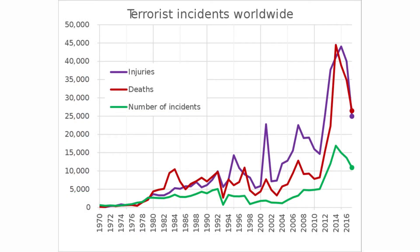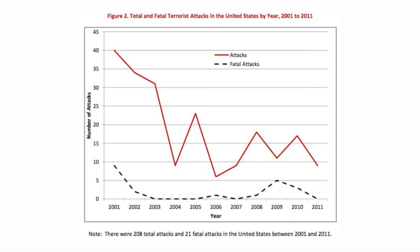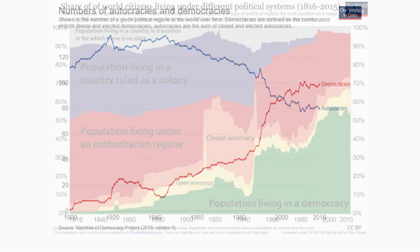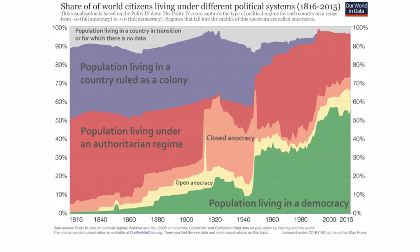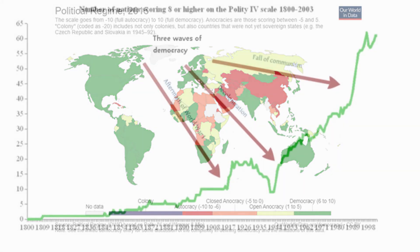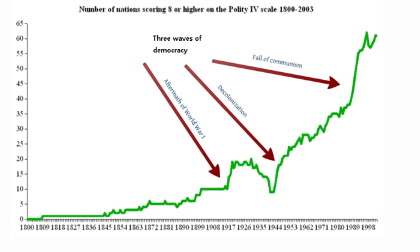Terrorist attacks globally have increased in the last decade. However, since 9/11, terrorist attacks in the U.S. have diminished. Worldwide over the last century, the number of democracies has increased, while the number of autocracies has decreased. This chart shows how the share of the world's population living in democracies has increased; in 1900 it was only 10%, now it is over 50%. China is the major country deemed not a democracy. Russia is classified as an anocracy, which is a blend of democracy and autocratic rule. Three major events have led to the growth of democracy: the aftermath of World War I, the process of decolonization post-World War II, and the fall of communism in 1989.